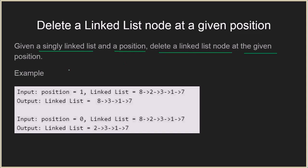For example, if the linked list given to you is this and the position is one, that means you have to delete the node at position one. This position actually starts from zero, so it is an index. Since the position is one, starting from zero we delete the element at index one, which is two. Once we delete this element, the remaining linked list will have 8, 3, 1, and 7.